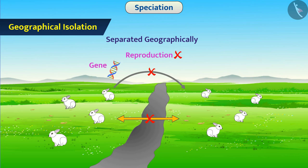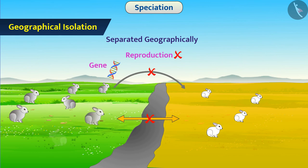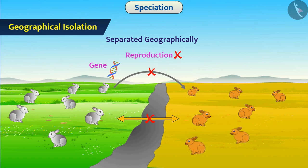If the geographical conditions are different, then the natural selection and evolution in two populations takes place differently. They become different from each other over generations. Many times, this results in development of two different species.